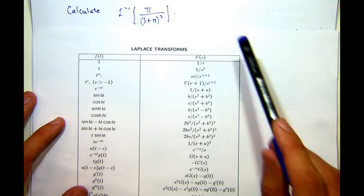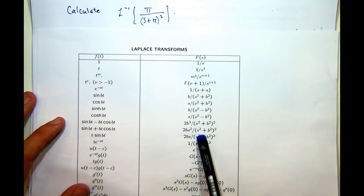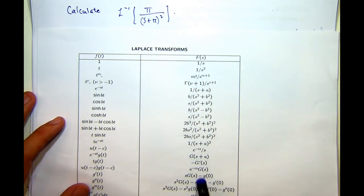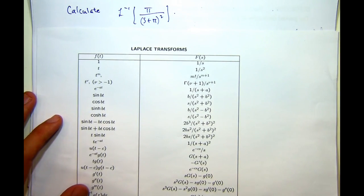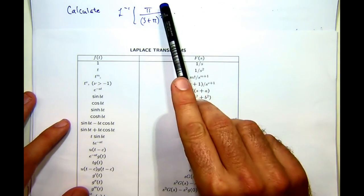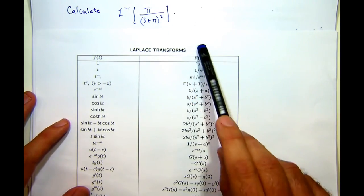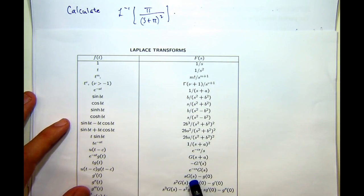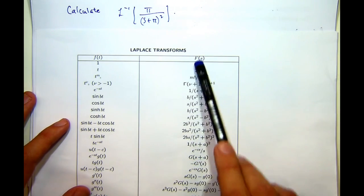So here we want to calculate an inverse transform. So we sort of want to go down this column and then work our way to the left. So you can see here, if I try to find this particular function down here, I actually can't see it anywhere.